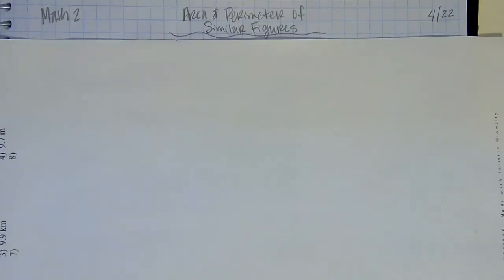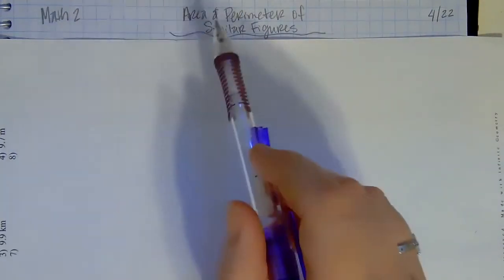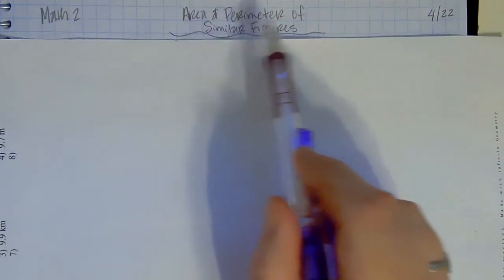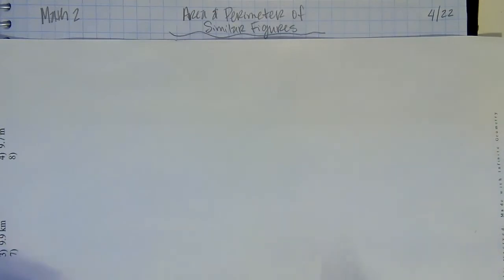Hey guys, happy Wednesday. This is for April 22nd, this is for Math 2, and today we're going to be talking about the area and perimeter of similar figures.